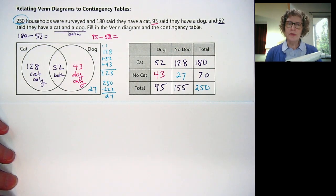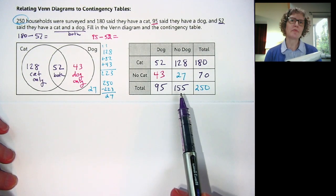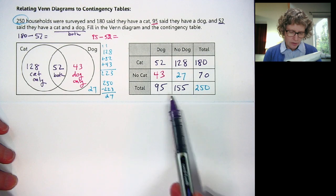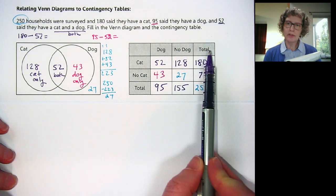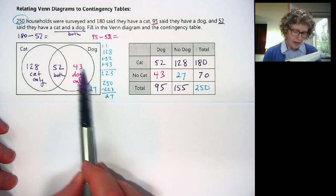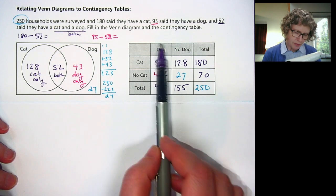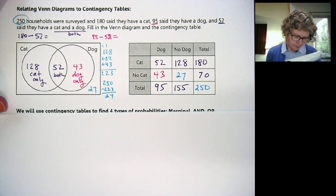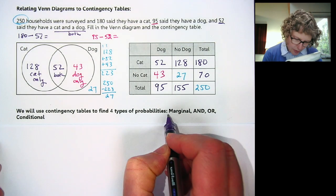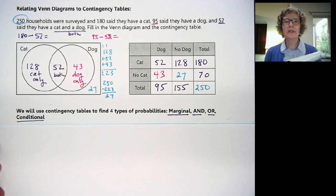This is just a different way of showing the information, but it's really useful when we start talking about probability — that's why we're switching to contingency tables. Another time it's useful is when we have three or more options, since you can't use Venn diagram circles for more than two categories. There are four types of probabilities we're going to find: marginal, and, or, and conditional. Let's do an example of each type.